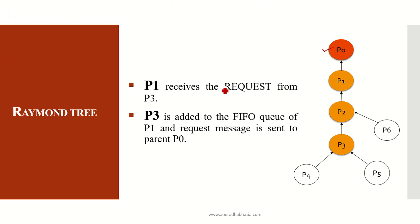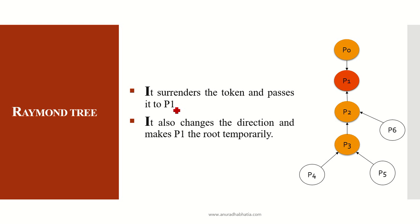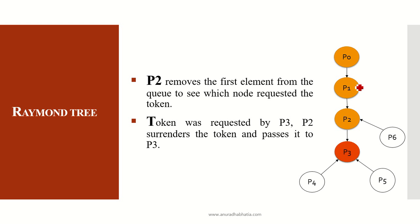All the arrows remain the same at this point. P0 has received the request from P3 via P2 to P1 and now P0. It surrenders the token and passes it to P1 since P0's work is done. P0 surrenders the token and it is passed to P1 because P1 was requesting the token to be given to P3, and the arrow direction changes here. P1 temporarily becomes the root. Now P2 moves the first element from the queue — the node that requested the token, which was P3 — and P2 surrenders the token, passing it to P3.